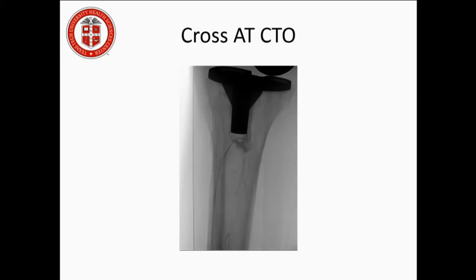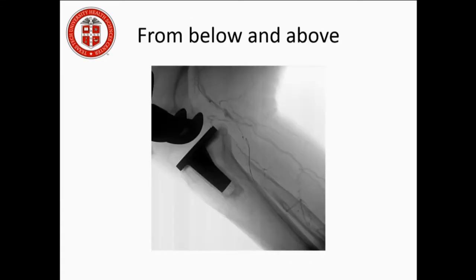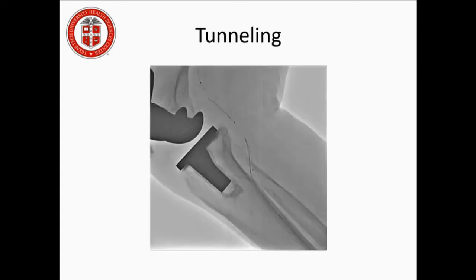We cross the anterior tibial CTO from below — as you can see, he has a knee implant — and now we're entering the popliteal from below. We're going from below via the retrograde access as well as the antegrade axis, and here we have tunneling. You can see the knee is folded because of the knee implant.